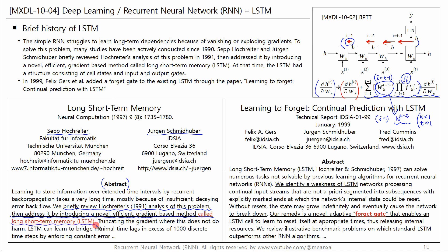At that time, LSTM had a structure consisting of cell states and input and output gates. In 1999, Felix Gers et al. added a FORGET gate to the existing LSTM. Their remedy is a novel, adaptive FORGET gate that enables an LSTM cell to learn to reset itself at appropriate times, thus releasing internal resources. Its role is to reset previous memories and learn new flows when a flow of data unrelated to the previous flow comes in.